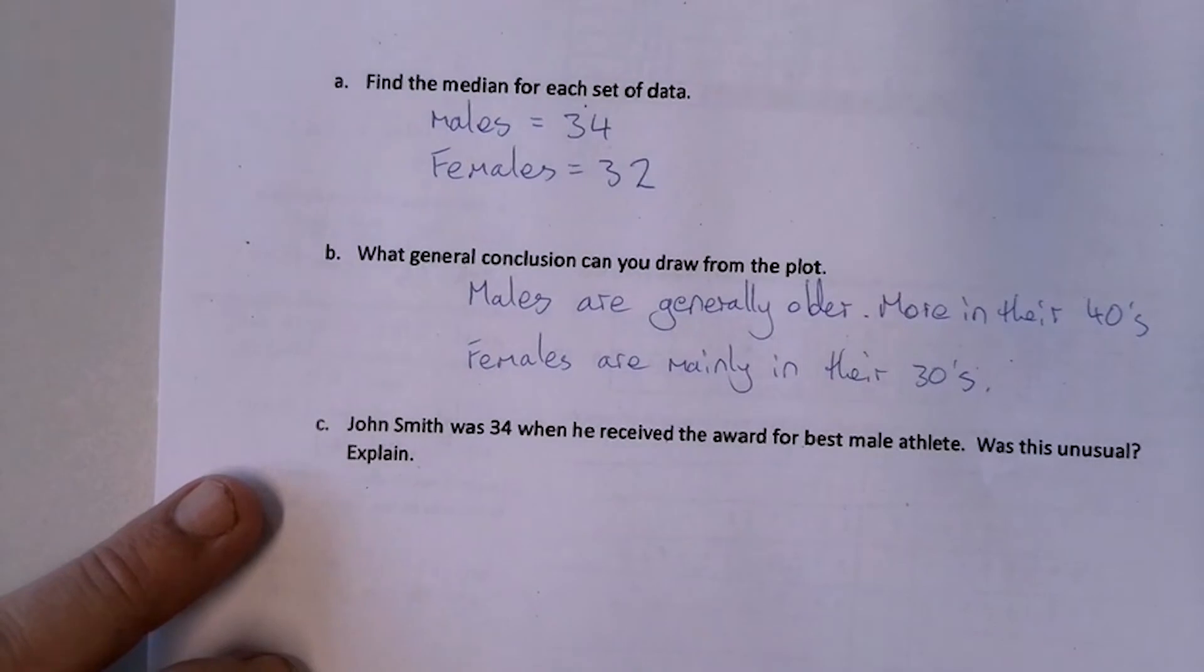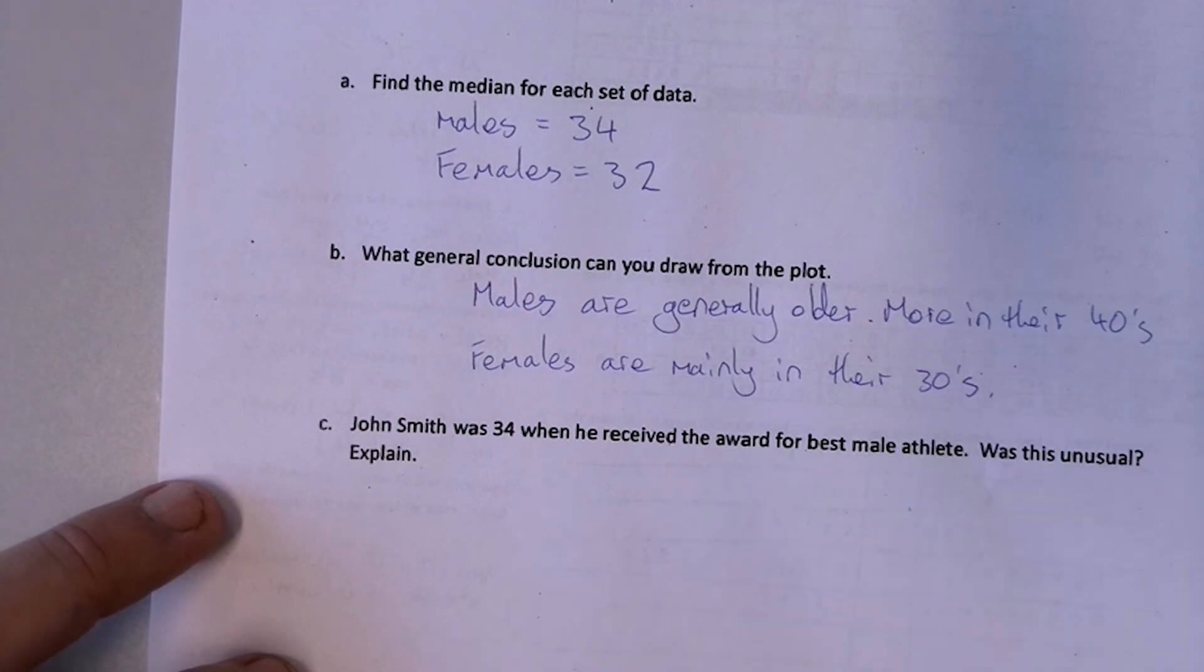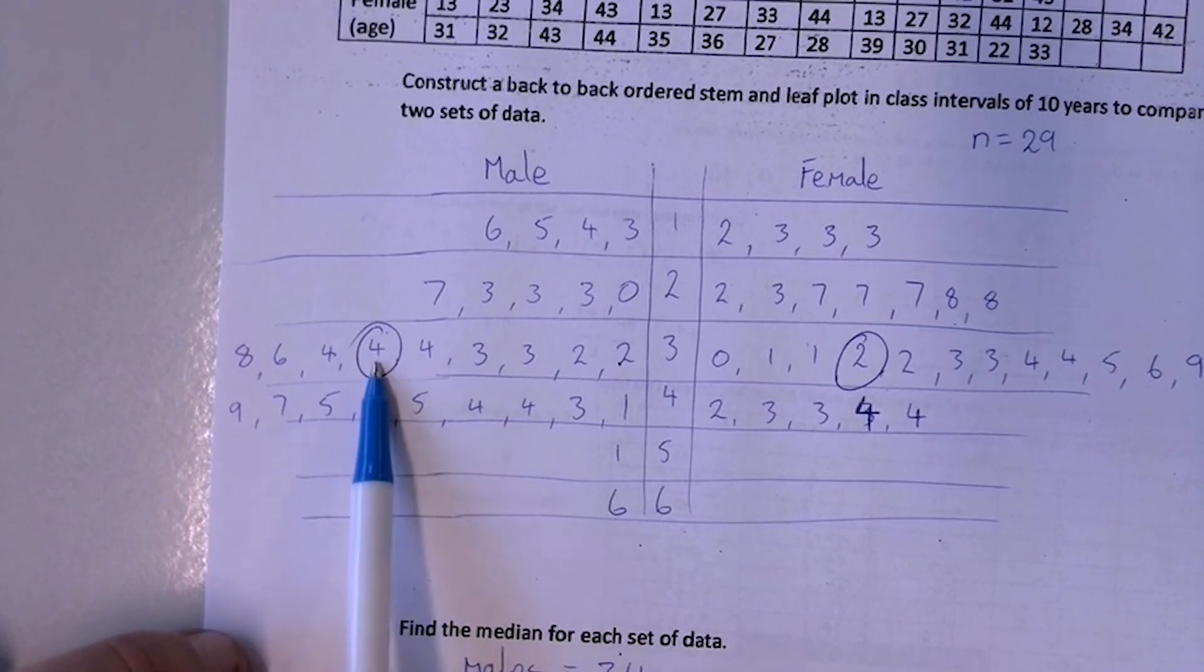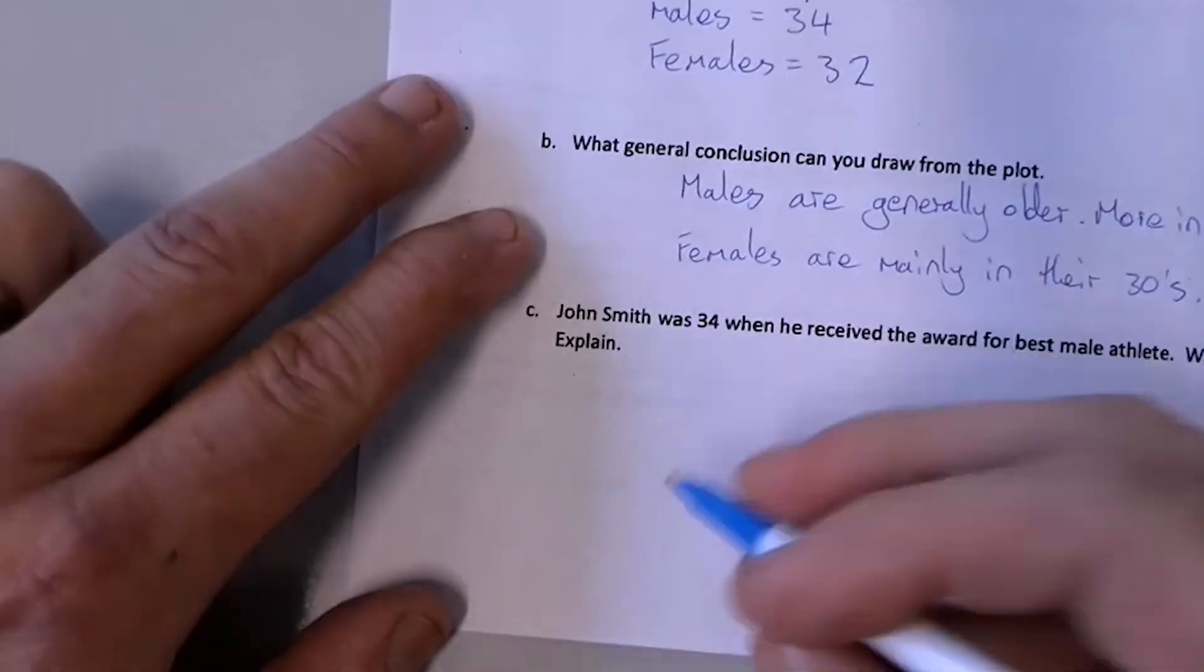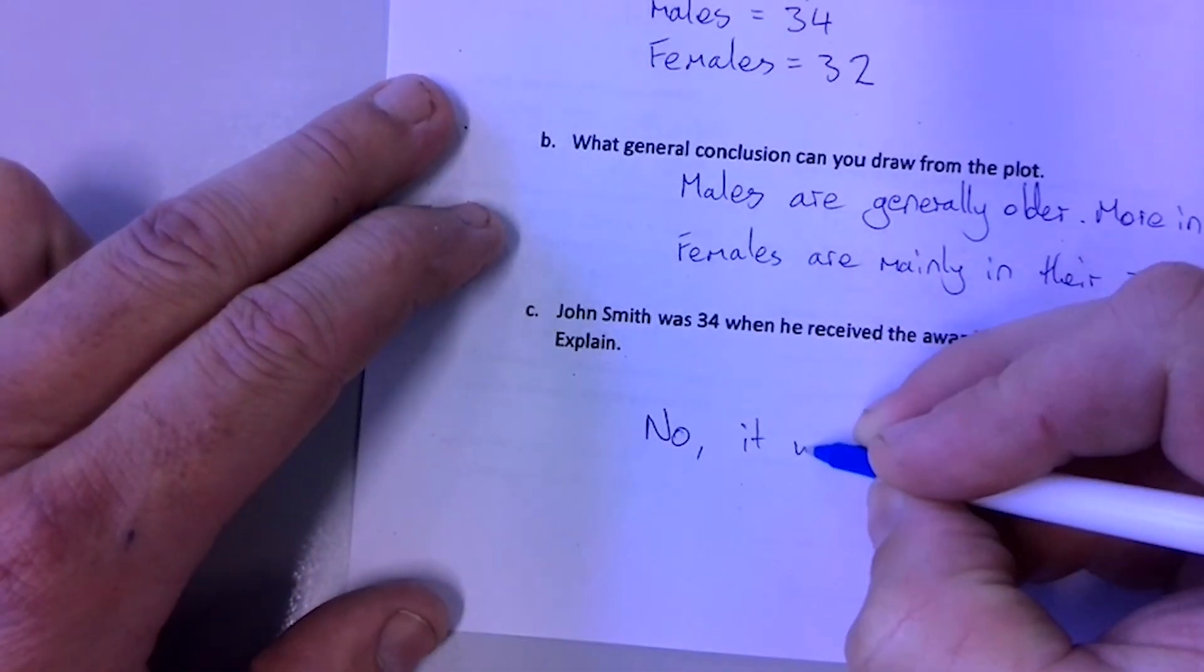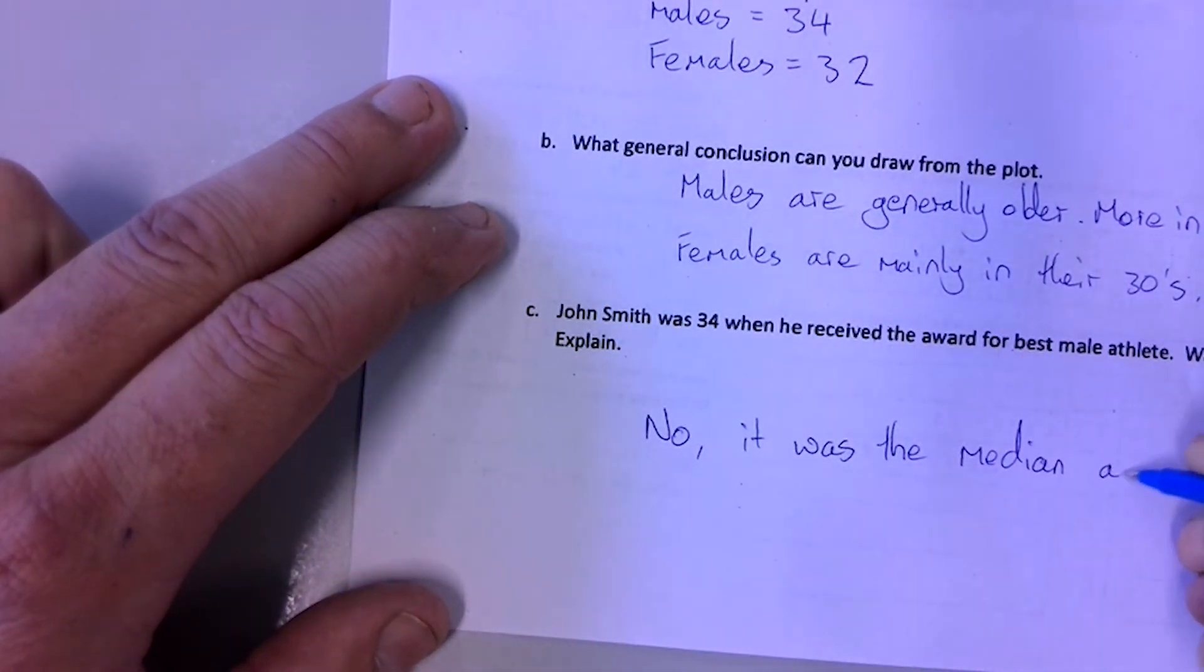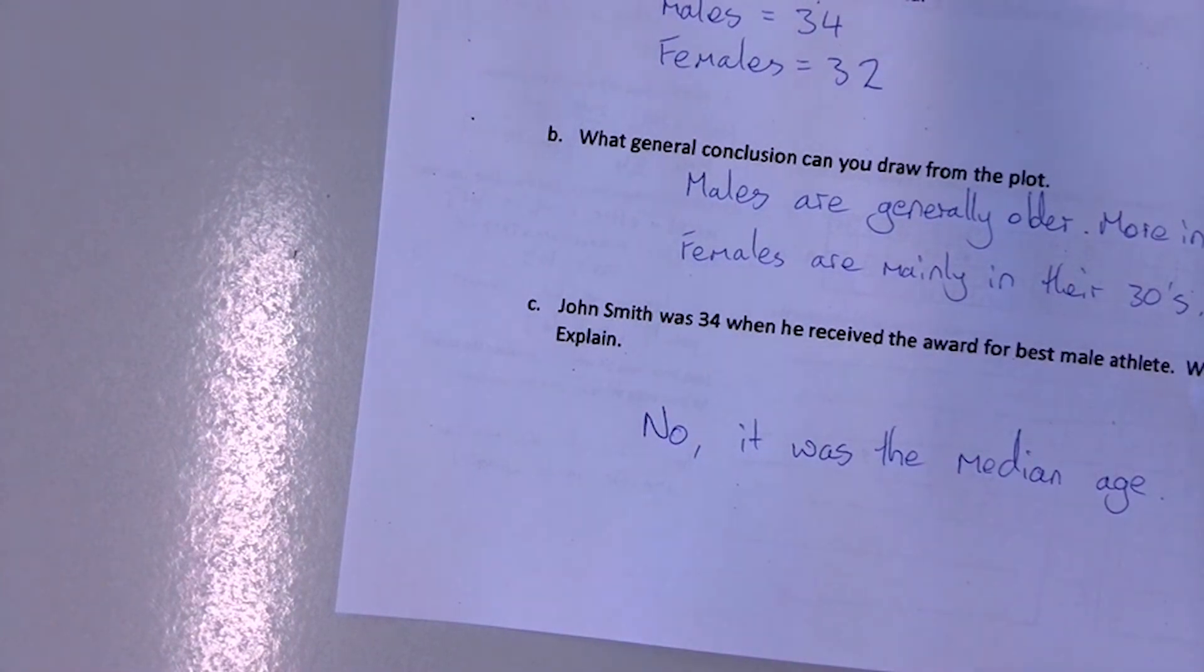Alright. John Smith was 34 when he received the award for best male athlete. Was this unusual? Well, looking at this data, no. I don't think that it's unusual. It was actually the median age and there are several males who are aged 34. So no, it was the median age. So you could actually argue that it actually had a central tendency of 34. So it's not surprising at all.